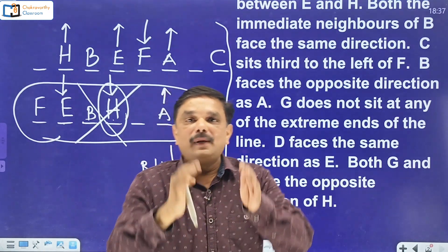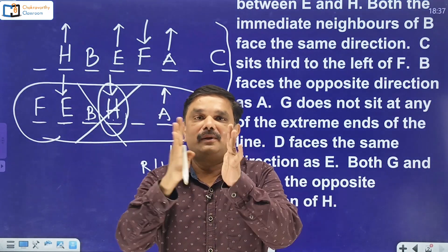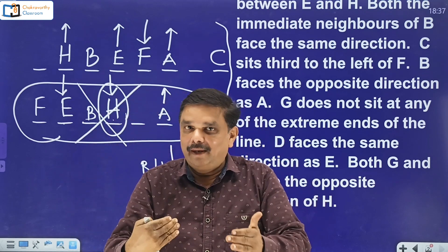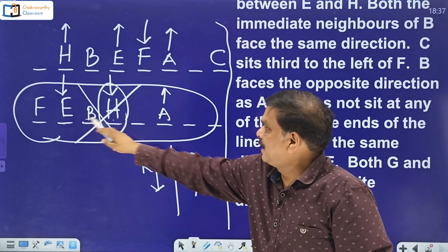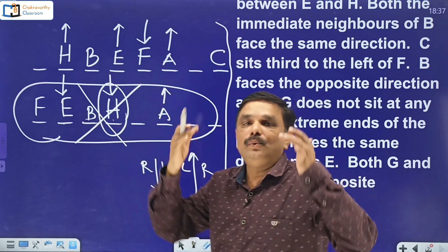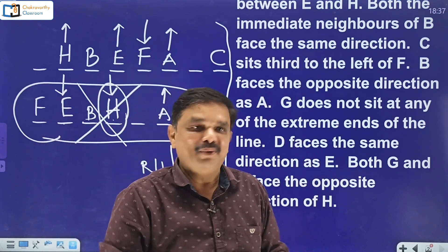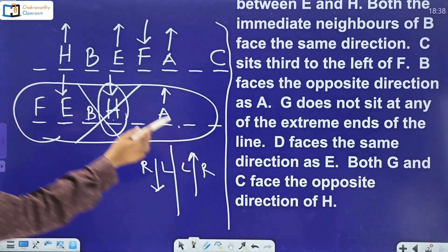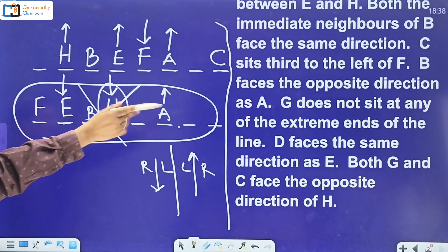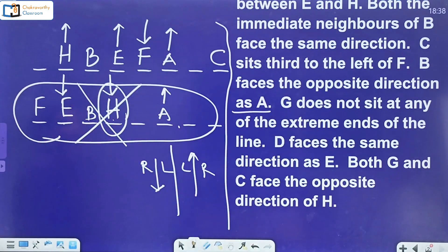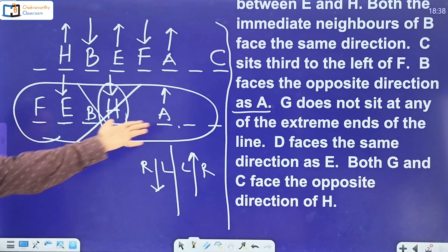Between the two possibilities, I have successfully eliminated one. The remaining arrangement is confirmed. Next: B faces the opposite direction of A. A is facing north, so B must face south — as simple as that.